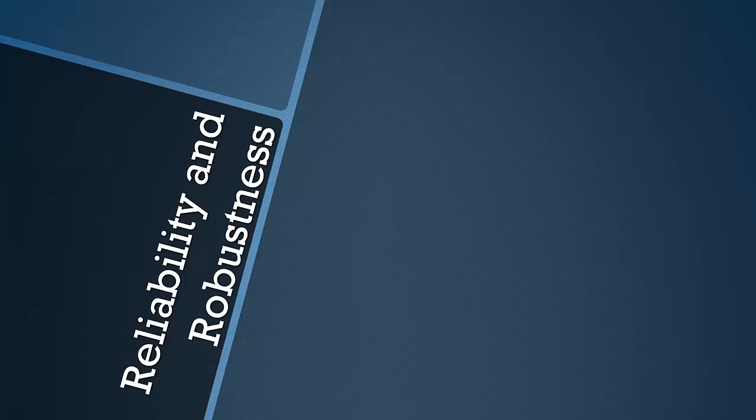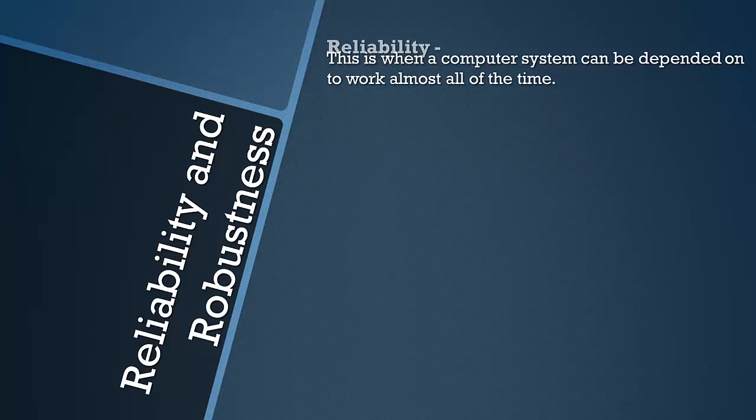We also need to look at reliability and robustness in computer systems. Reliability is when a computer system can be depended on to work almost all of the time. It's quite difficult to define precisely, but we all understand what it means — you want to turn your computer on and have it work first time. As technology advances, systems become more and more reliable.